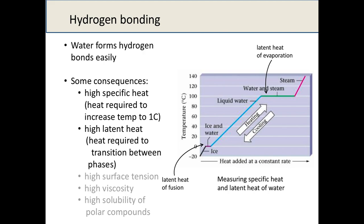We characterize this with two terms. First is specific heat — the amount of heat energy needed to increase a material's temperature by one degree Celsius. Second is latent heat — the amount of heat energy required to push a phase transition, such as from solid to liquid or liquid to gas. For water, both of these traits are quite high relative to other materials: it has a high specific heat and a high latent heat.